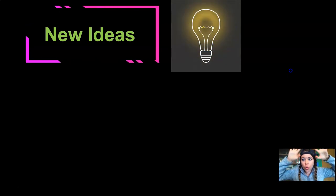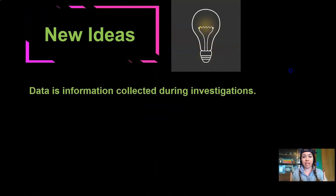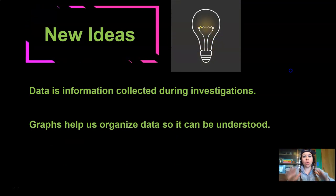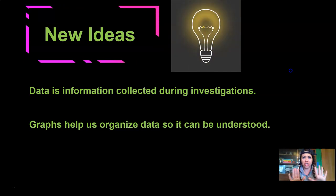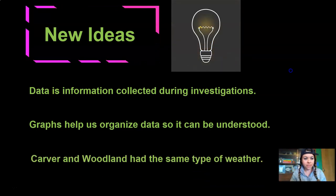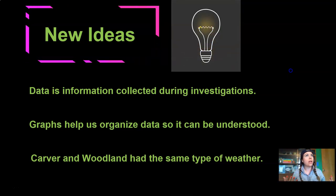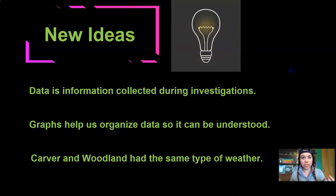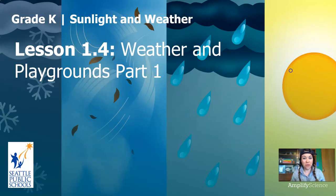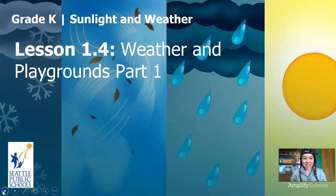Let's think about what new ideas we've gotten today from this part of the lesson. Data is information collected during investigations. Graphs help us organize data so that it can be understood. And Carver and Woodland Elementary had the same type of weather. That makes me really think about what those principals told us about the different temperatures at the playground. That's it for Lesson 1.4, Weather and Playgrounds Part 1. I'll see you right back here for Weather and Playgrounds Part 2. See you then. Bye.